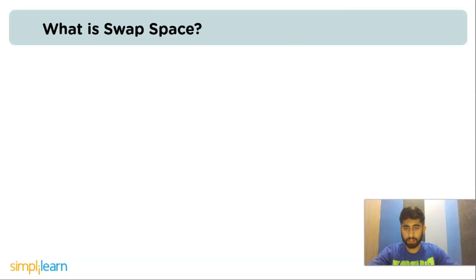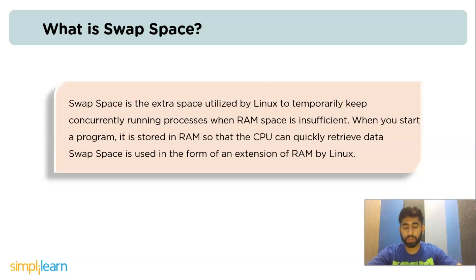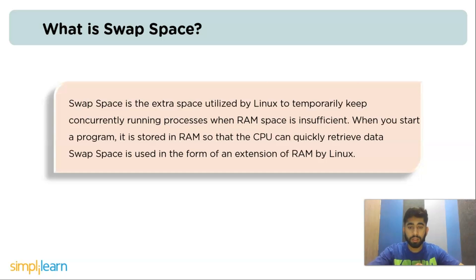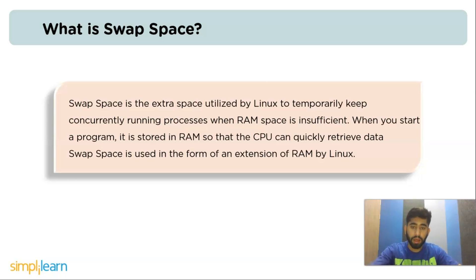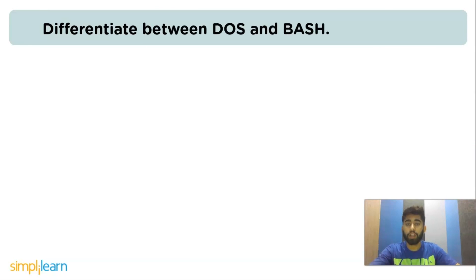The next question is: what is swap space? Swap space is the extra space utilized by Linux to temporarily keep concurrently running processes when RAM space is insufficient. When you start a program it is stored in RAM so that the CPU can quickly retrieve data. If you have more running programs than RAM can accommodate, the swap space is used to store these programs. The processor will search both RAM and swap space for data.